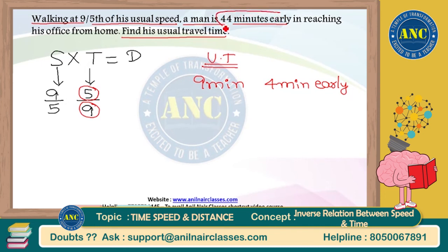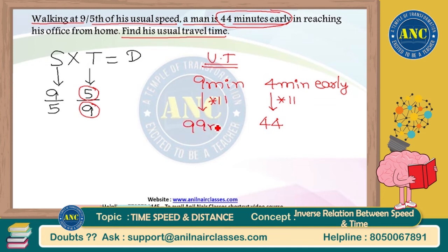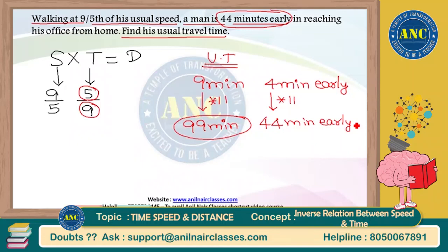The question says I am early by 44 minutes, but according to the fraction I am early by 4 minutes. So 4 must become 44 — multiply by 11. The denominator 9 also multiplies by 11: 9 into 11 is 99 minutes. The usual travel time is 99 minutes. If you know the concept, you can solve this within 5 seconds without using a pen.